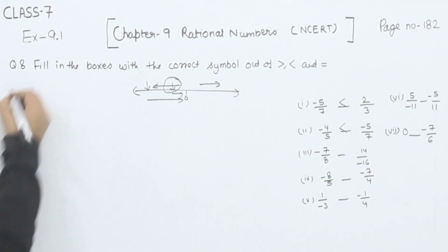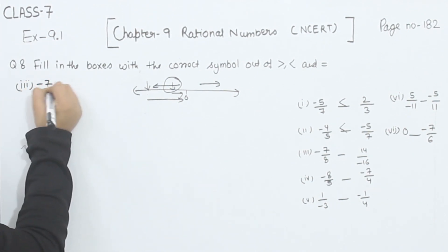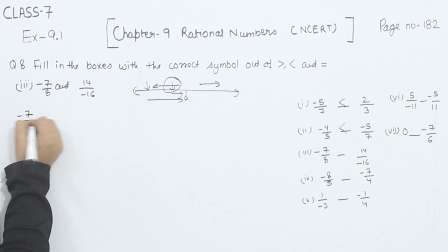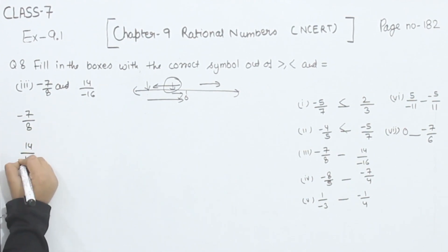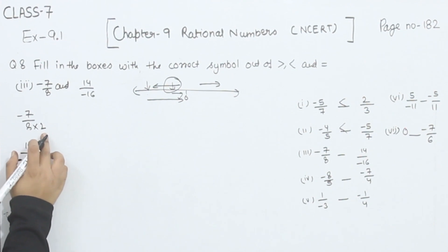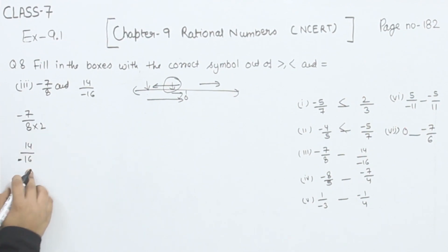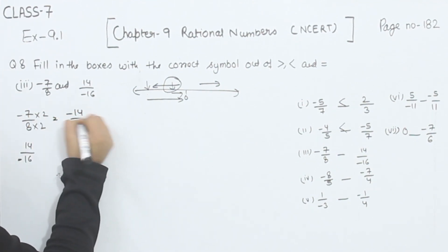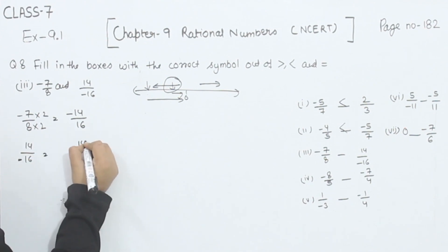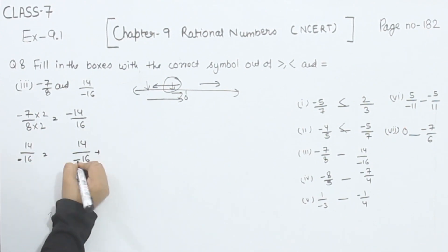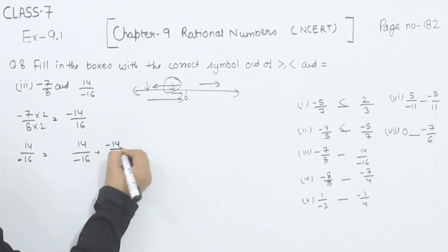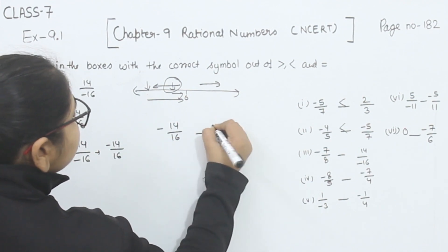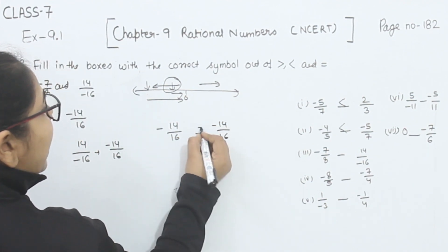Now comes part 3. In part 3, we have minus 7 by 8 and 14 by 16. If I multiply the denominator 8 by 2, it becomes 16, which matches. So multiplying numerator as well: minus 7 × 2 gives minus 14 by 16. The second fraction is 14 by 16, but writing the negative in the numerator gives minus 14 by 16. So we have minus 14 by 16 and minus 14 by 16 — they are equal.